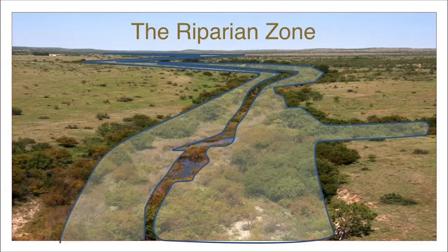This includes the stream bank, flood plain, plants, soils, and rocks that make up the ribbon of land that flanks the waterway. Areas adjoining lakes and reservoirs are also considered riparian, but this short course will focus mainly on rivers and streams.